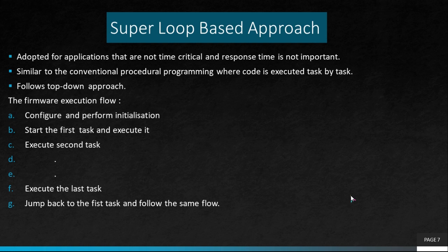For example, if there are ten tasks, the first task is executed first, followed by the second, the third, and so on. It follows a top-down approach. The execution flow starts with configuration and initialization, then tasks execute in sequence — first, second, third — and finally jumps back to the first task, repeating continuously.